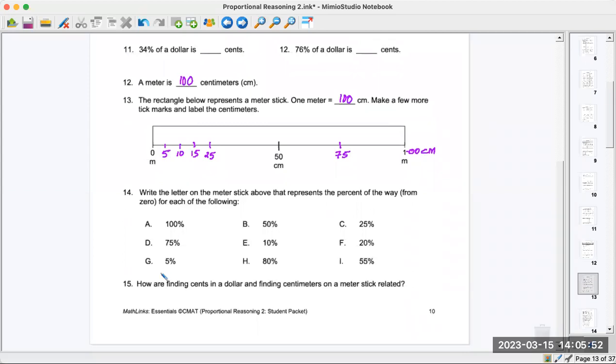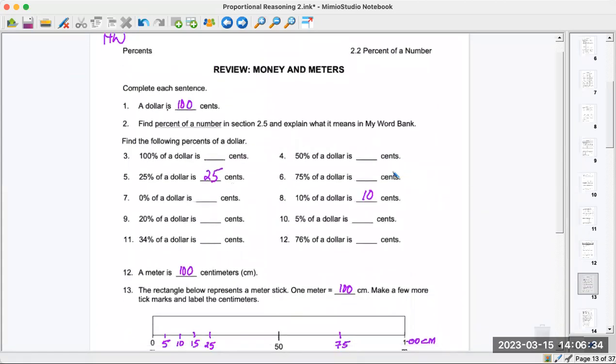Down here it says write the letter on the meter stick above that represents the percent of the way. 100% of course is down here, 50% is right here, and 75% is right here. Easy. The main thing is to get these numbers down right. A lot of students have trouble with that. How are finding cents in a dollar and centimeters on a meter stick related? I would say they're all out of 100: 100 cents, 100 centimeters.